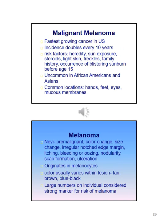Malignant melanoma is the fastest growing cancer in the United States; the incidence doubles every 10 years. Risk factors include heredity, sun exposure, steroids, lighter skin, freckles, family history, and an occurrence of blistering sunburn before age 15. It is uncommon in African Americans and Asians. Common locations are hands, feet, eyes, and mucous membranes.